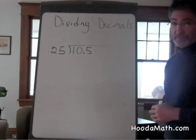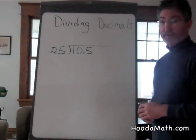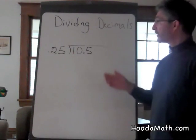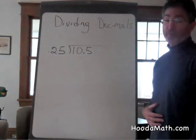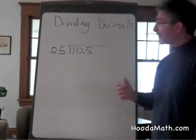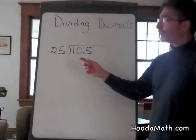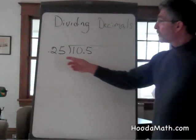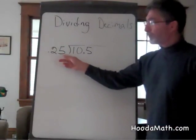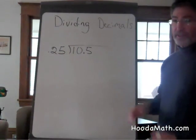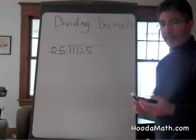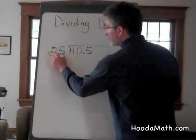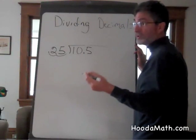Division with decimals is the same as normal division except that it's necessary to first make the divisor a whole number. Since there are two places to the right of the decimal, we multiply by 100 and move the decimal two places to the right. Now it's 25.